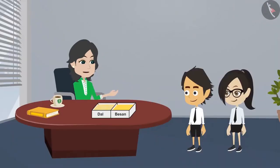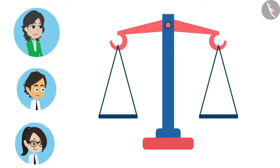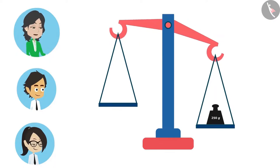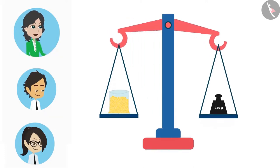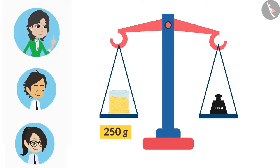Now to divide this into two equal parts, we will measure 250 grams. For this, we will keep 250 gram weight on one side of the scale and we will keep adding Dal on the other side of the scale till both sides of the scale are balanced. Look, now there is 250 gram dal on one side of the scale.